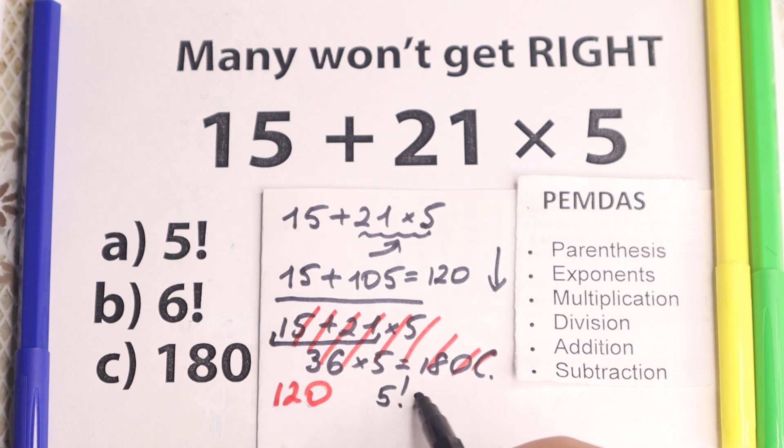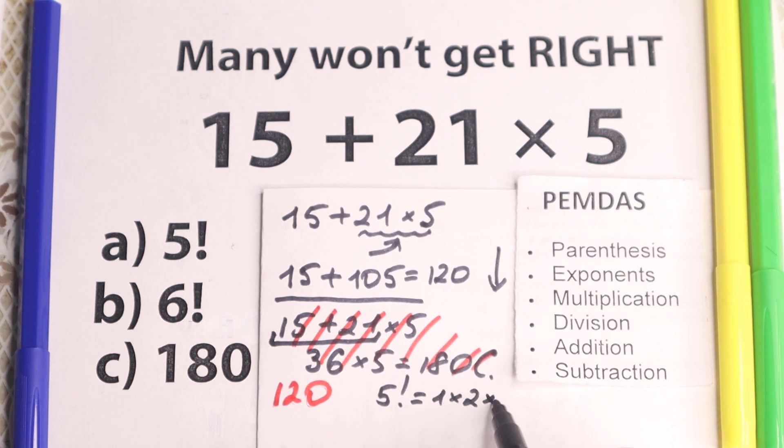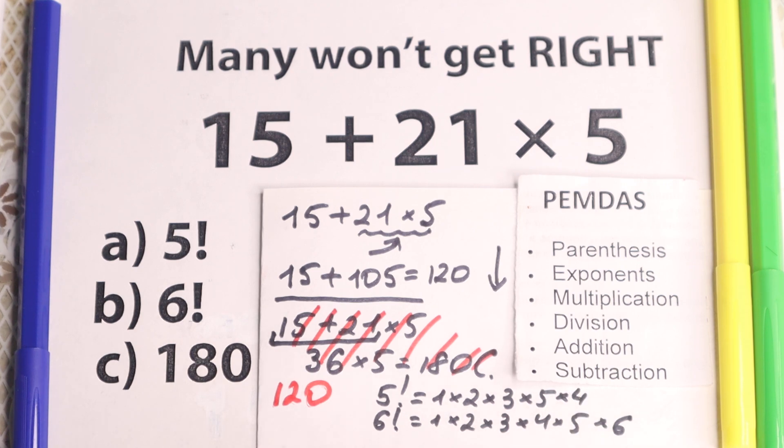This is a product from 1 to 5, 1 times 2 times 3 times 4 times 5, and 6 factorial is a product from 1 to 6. Let's write it, 1 times 2 times 3 times 4 times 5 times 6, and right here I forget 4, but it doesn't matter.